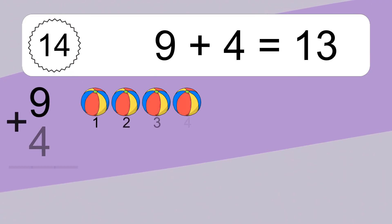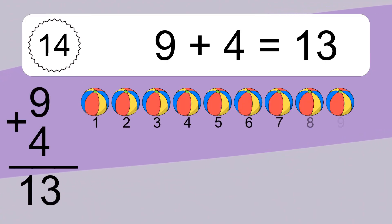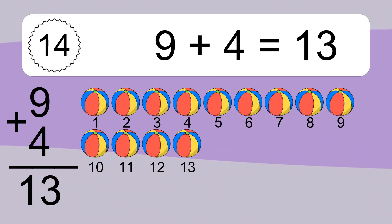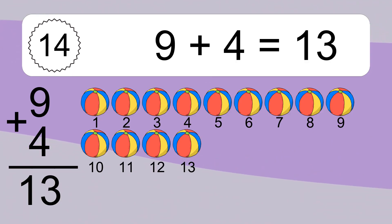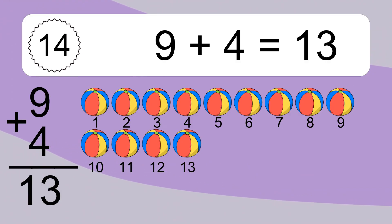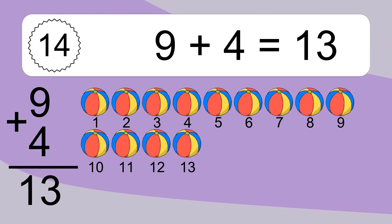9 plus 4 equals 13. Let's count it. 1, 2, 3, 4, 5, 6, 7, 8, 9, 10, 11, 12, 13.